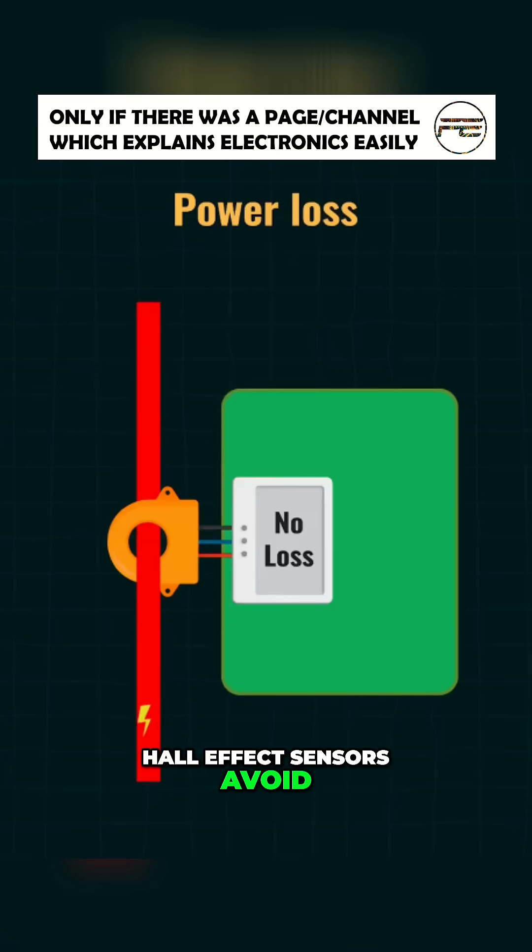Hall effect sensors avoid this completely. Since the sensor doesn't touch the current path, there's zero insertion loss, which means no wasted power due to the sensor itself.